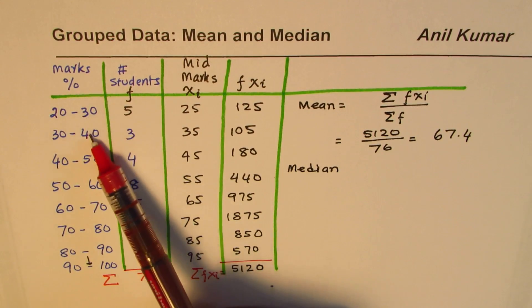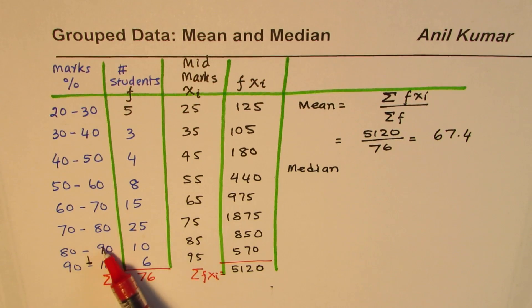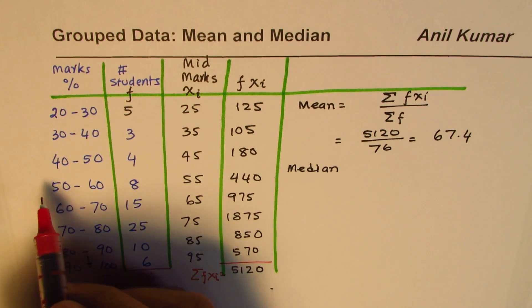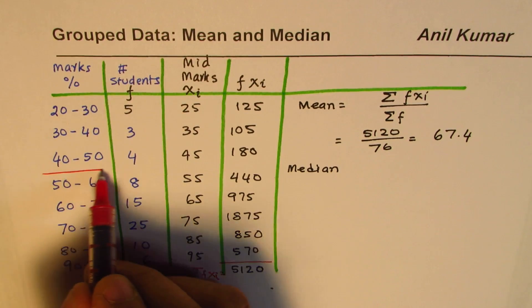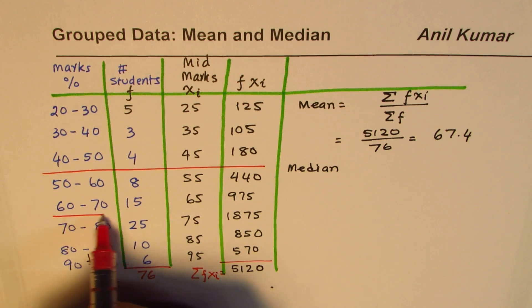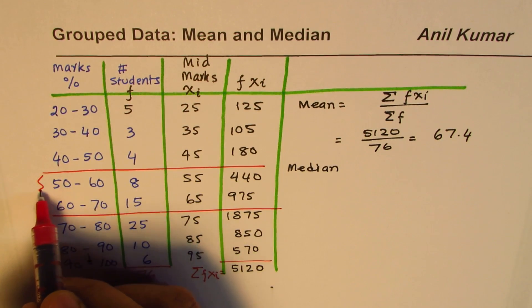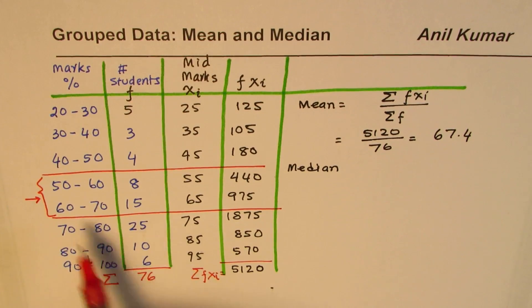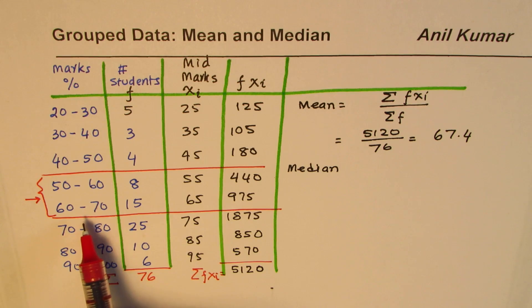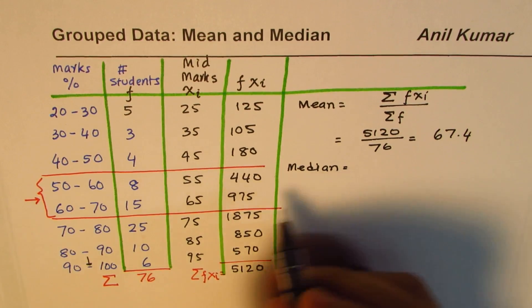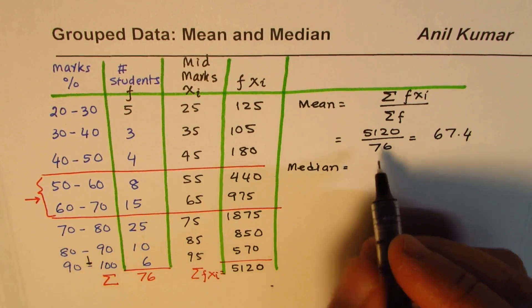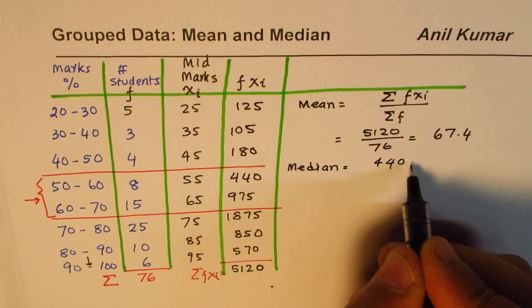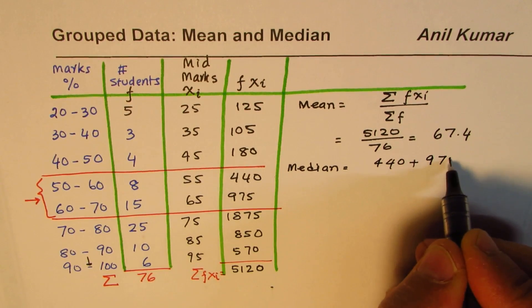Now the question is how do you find the median. Median will be somewhere in the center. We have 1, 2, 3, 4, 5, 6, 7, 8 which is even number of groups, so the two groups which are right in the center will be these two. Somewhere right in the middle we are expecting the median to be.